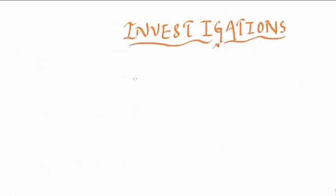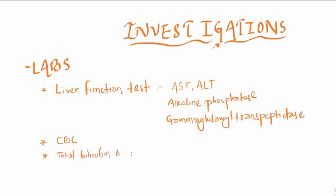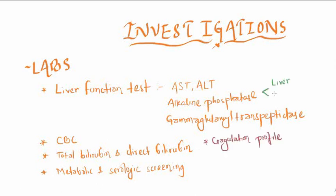Investigations start with labs. We do liver function tests: AST, ALT, alkaline phosphatase which increases in both bone and liver pathologies, gamma-glutamyl transpeptidase which increases only in liver pathologies, CBC, total bilirubin and direct bilirubin, metabolic and serologic screening, and coagulation profile. Gamma-glutamyl transpeptidase is very specific for extrahepatic biliary atresia.